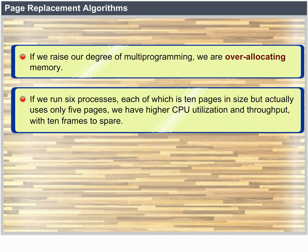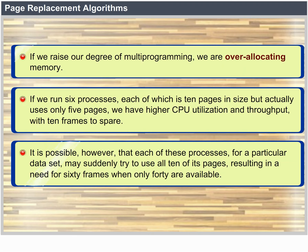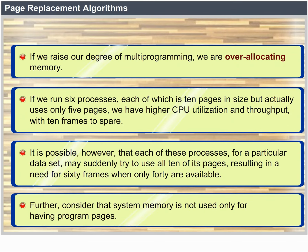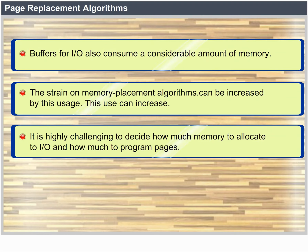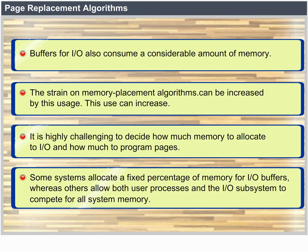It is possible, however, that each of these processes for a particular dataset may suddenly try to use all 10 of its pages, resulting in a need for 60 frames when only 40 are available. Further, system memory is not used only for holding program pages. Buffers for I/O also consume a considerable amount of memory. Deciding how much memory to allocate to I/O and how much to program pages is a significant challenge. Some systems allocate a fixed percentage of memory for I/O buffers, whereas others allow both user processes and the I/O subsystem to compete for all system memory.